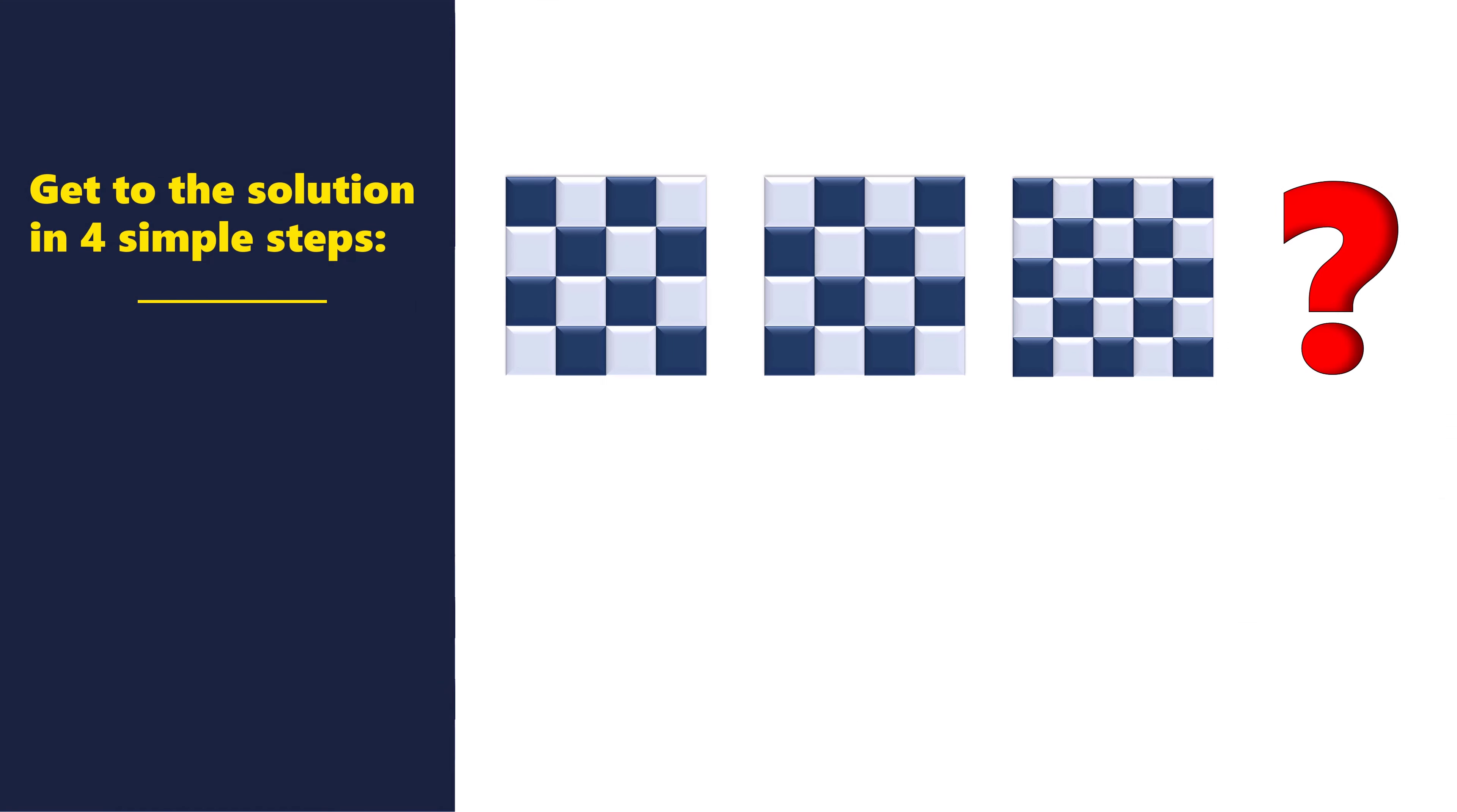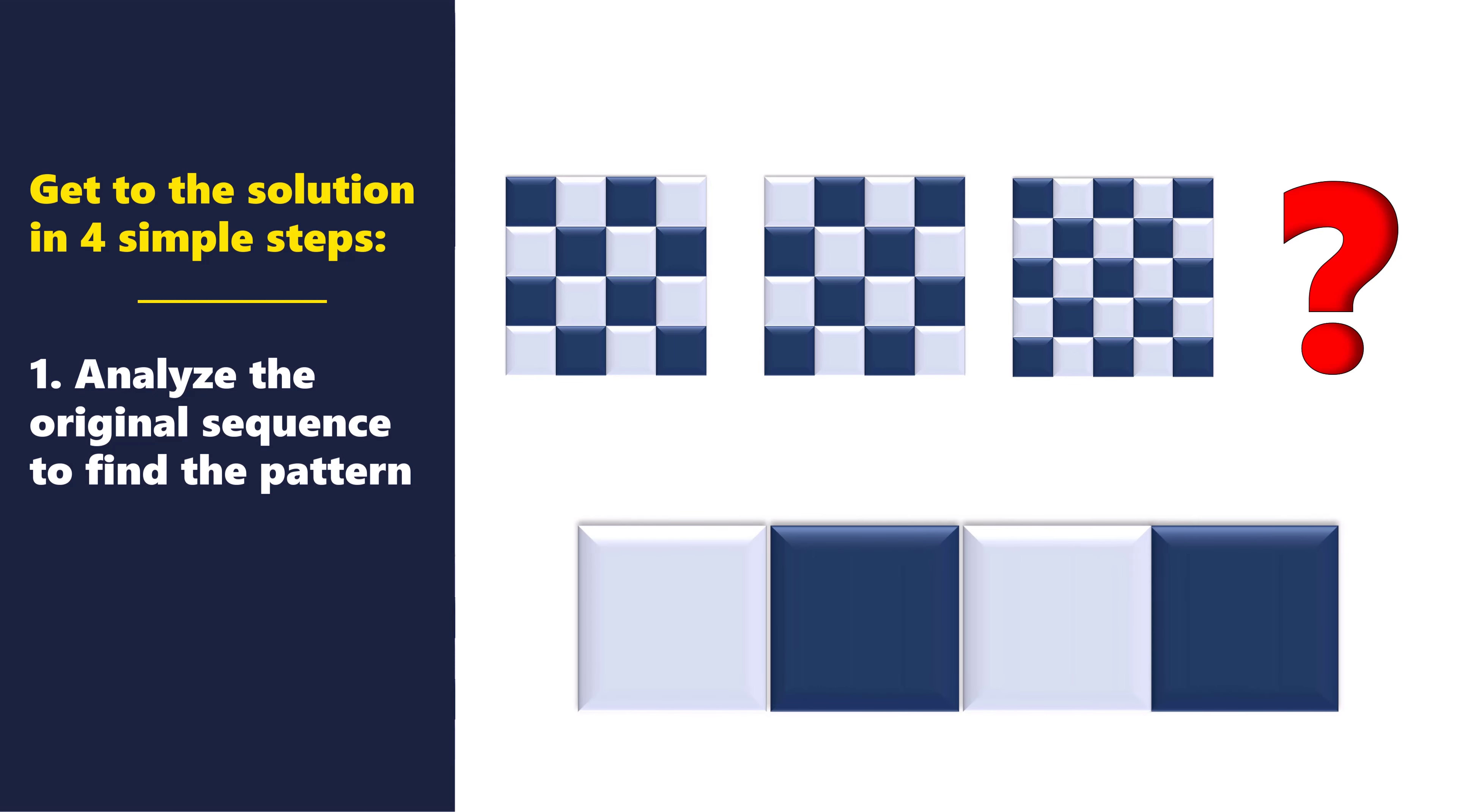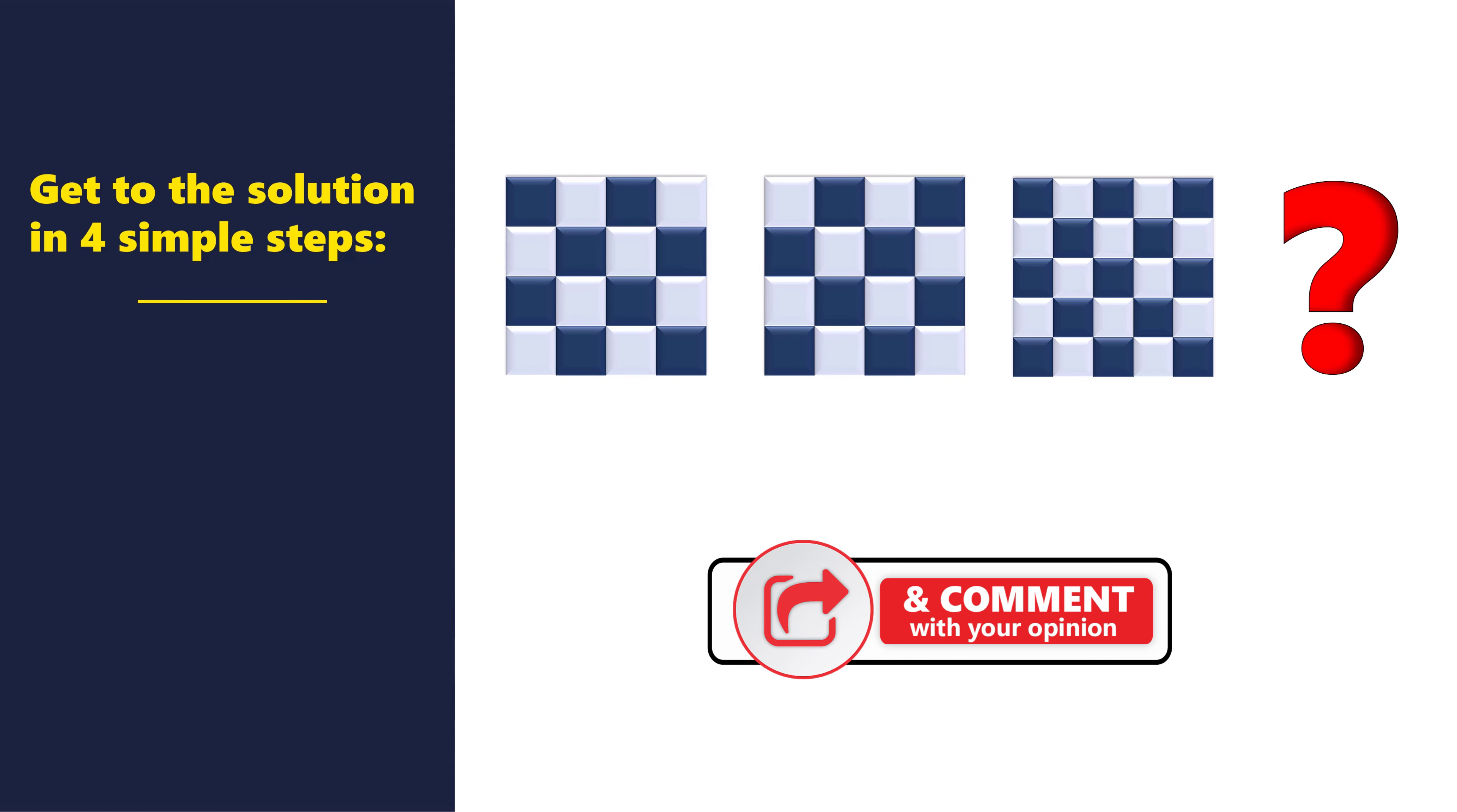Our goal is to get to the solution in four simple steps. In step one, we need to analyze the original sequence of squares to find the pattern. Even though all objects are squares, the two squares are 4x4, and the third square is 5x5. We also can see that all shapes have alternating colors. But the first shape starts with the darker square in the upper left corner, and the second square starts with the lighter square in the upper left corner.